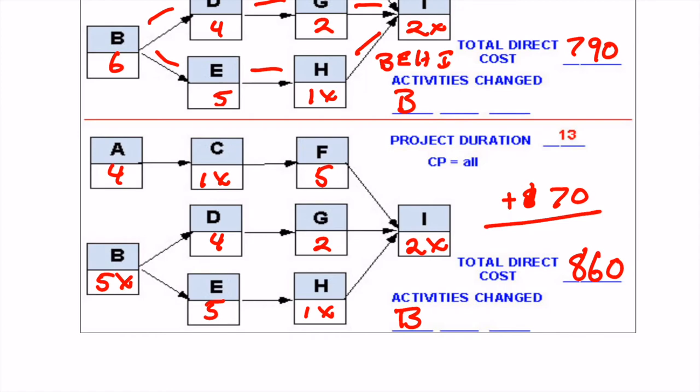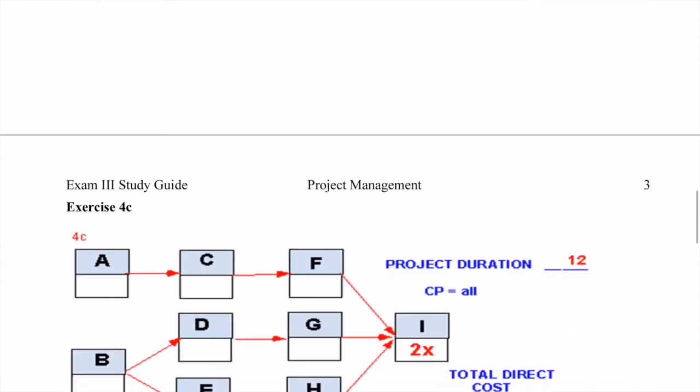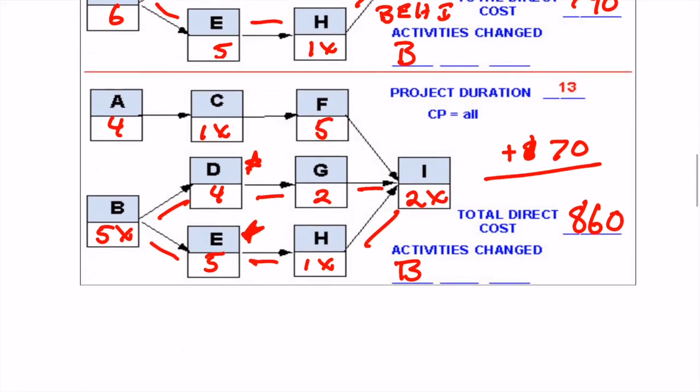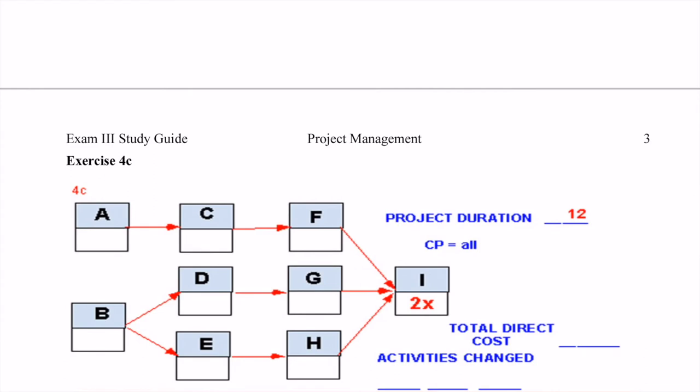So now what we need to do is figure out what are we going to change to get this down another time period. In this case, we can't do B anymore. We still have this as our two critical paths. So what we're going to have to do is do E because that's the only candidate down here, and E can be crashed. It's going to cost $50 per time increment. It looks like we can reduce it three weeks. But it's going to cost us $50 for that, and then we're going to have to do D or G. D is going to cost us $20 and G would cost us $30. So we're going to do E and D, and that will get us down to the next project duration of 12. So let's go ahead and do that.